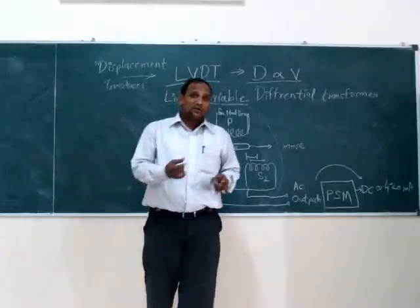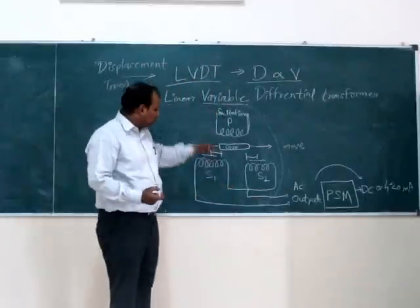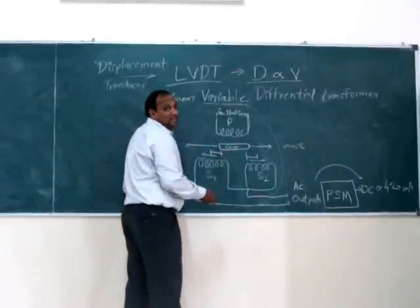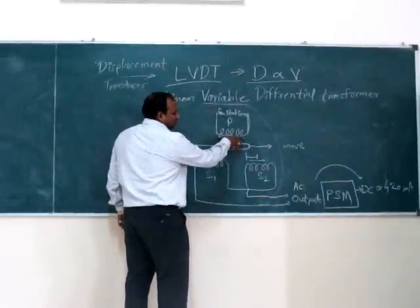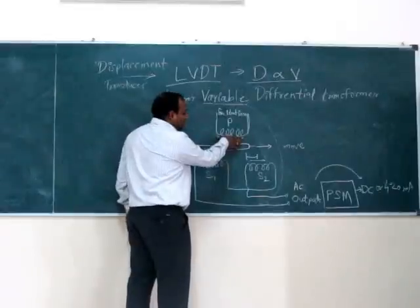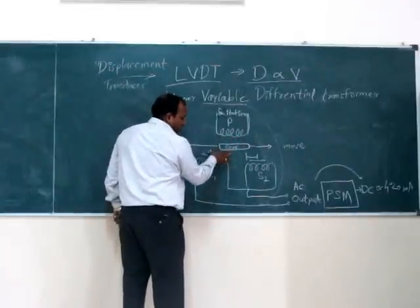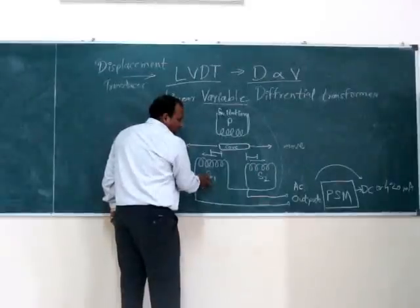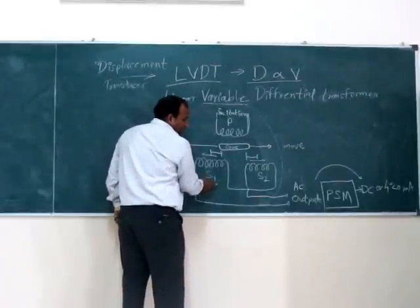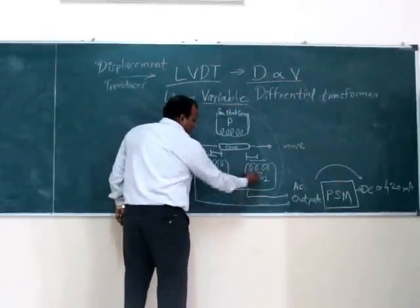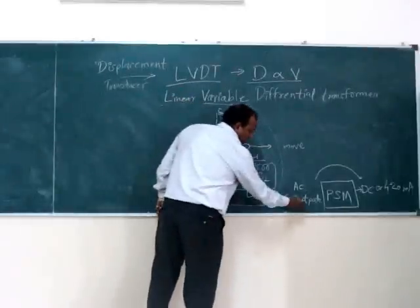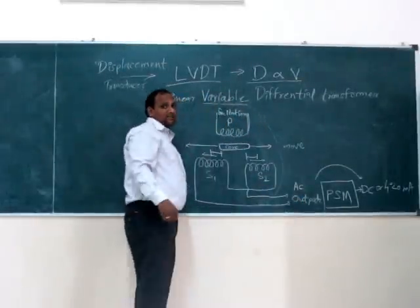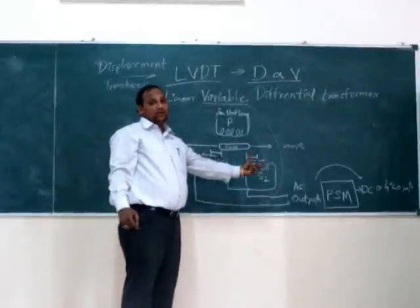The question may come in your mind: how does this happen? As I explained, this happens on the principle of magnetism. The supply is in the primary coil, and due to this, induction happens due to the movement of the iron core. That generates the difference in voltage between S1 and S2, which is considered as the output — recorded in the form of AC or DC voltage.